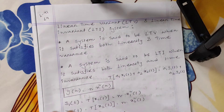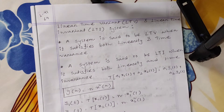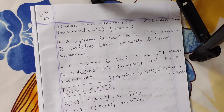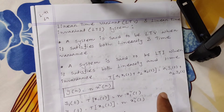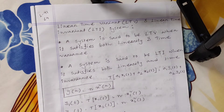Whether LTI or LTV, first of all the system needs to be linear — this is the first condition. Once we confirm linearity, we check whether it is time variant or time invariant. If it is time variant, we call it LTV — linear time variant. If it is time invariant, we call it LTI — linear time invariant.